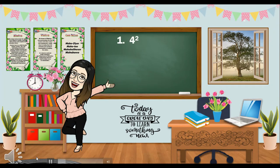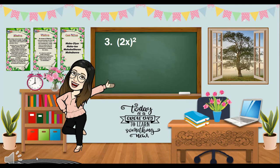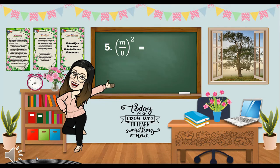First, we have 4 squared. 4 squared is equal to 4 times 4, which is equal to 16. Next, we have 7 squared, which is equal to 7 times 7, that is 49. For the third number, we have quantity (2x) squared, that is 2x times 2x, which is equal to 4x squared. Next is quantity (x squared y) squared, which is equal to x squared y times x squared y, which when simplified is equal to x to the 4th y squared. For the last number, we have quantity (m over 8) squared, that is m over 8 times m over 8, which when simplified is equal to m squared over 64.